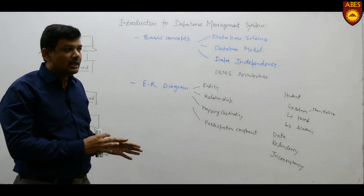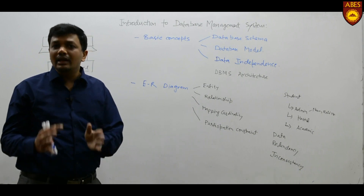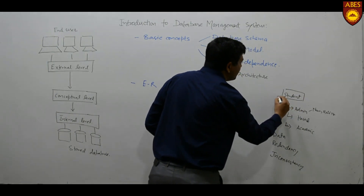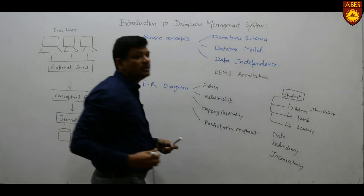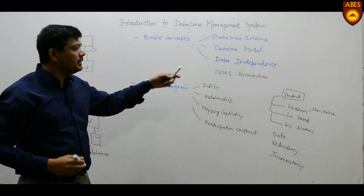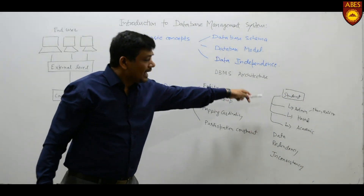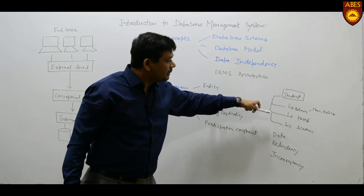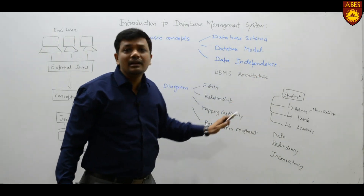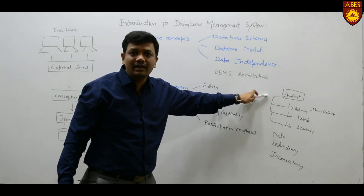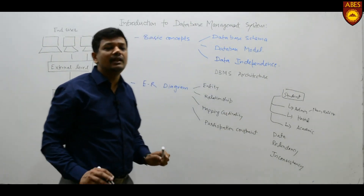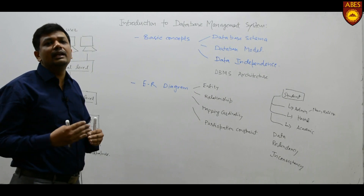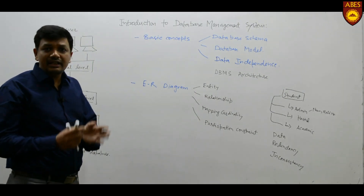That is why we have the database management system approach, where you can have a central table named 'Student.' All other departments can directly access this central student table. Whatever information is stored will be in that one student table, and admin, hostel, and academic departments all access it from one place — no duplication of data, no redundancy, and less chance of inconsistency.